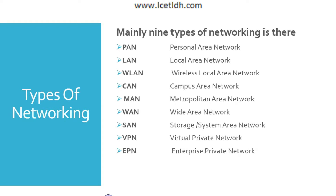There are several types of networking available to us. First is the Personal Area Network (PAN), which is the smallest and most basic type of network. A PAN is made up of a wireless modem, a computer or two, phones, printers, tablets, etc., and revolves around one person in one building. These types of networks are typically found in small offices or residences and are managed by one person or a particular organization.